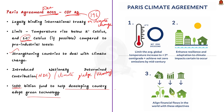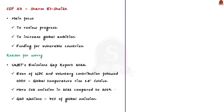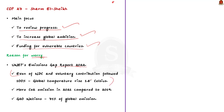Countries at COP27 will focus on three things: reviewing progress on emission control so far, raising global ambition for future emission reduction, and discussing funds to help vulnerable countries adapt to climate change. However, climate scientists are worried. According to UNEP's Emissions Gap Report 2022, even if all nations strictly implement their NDCs, global warming could still rise to 1.8 degrees Celsius. The report also says that global CO2 emissions increased in 2021 compared to 2019, and this trend will continue till 2030, with disastrous consequences.